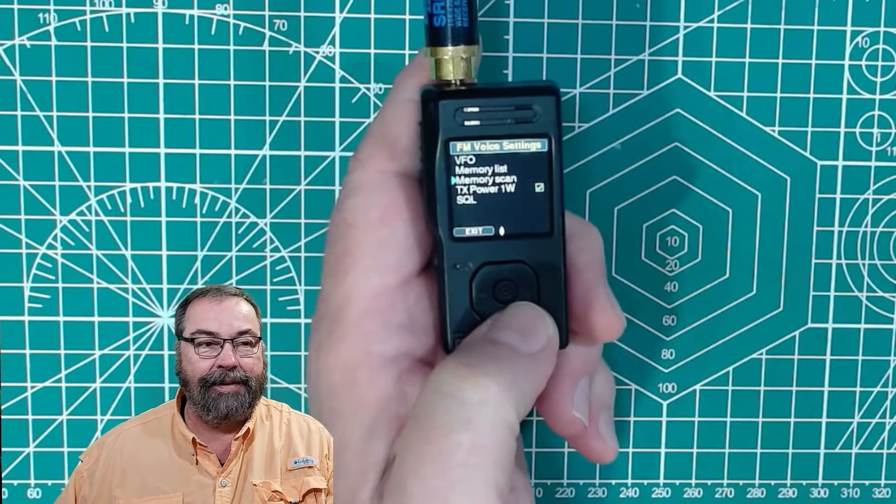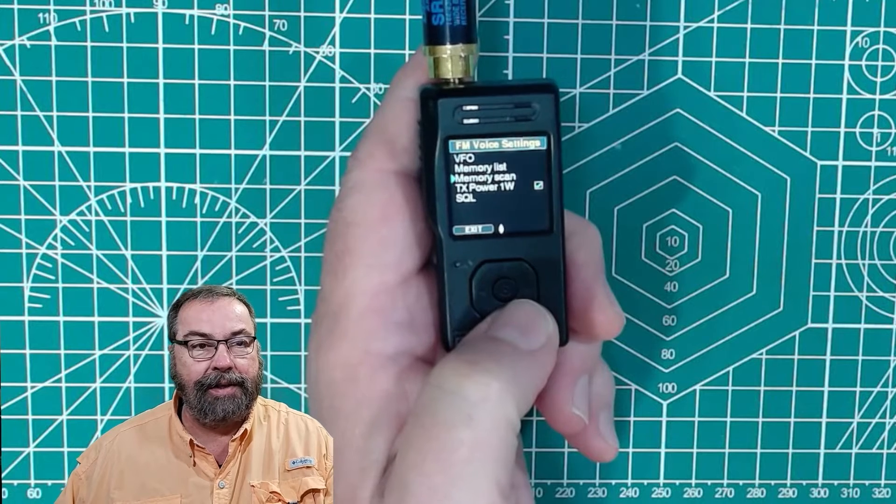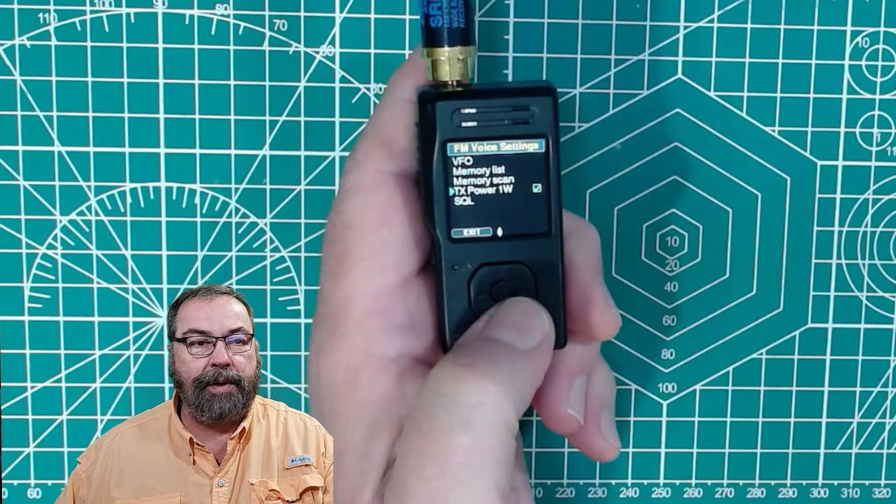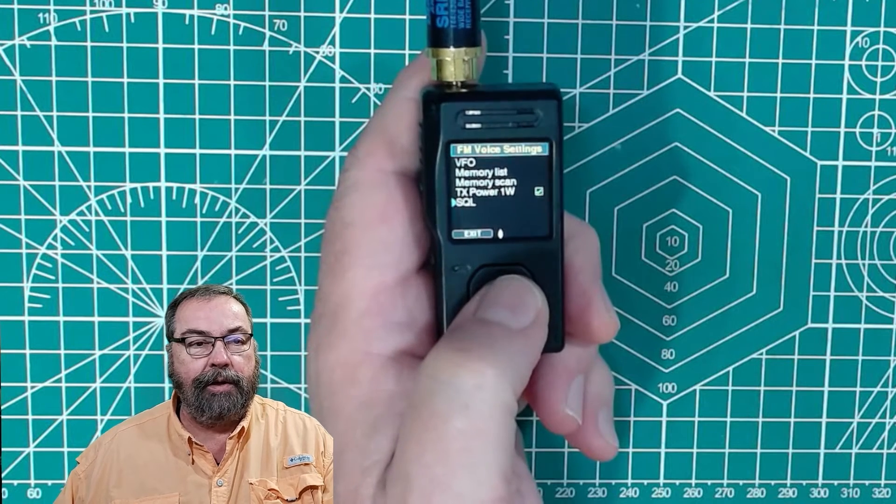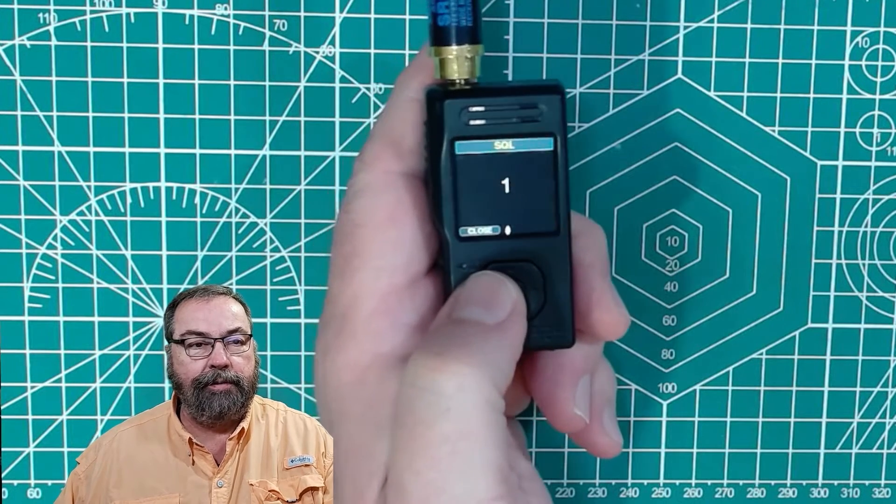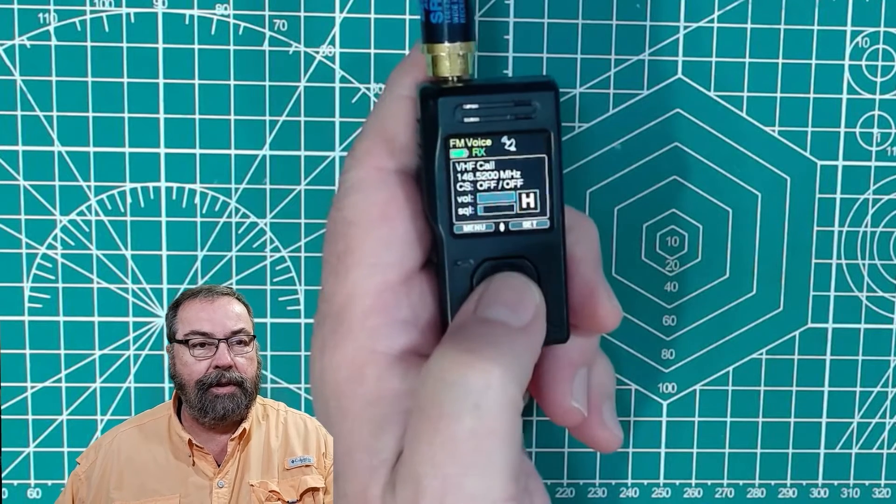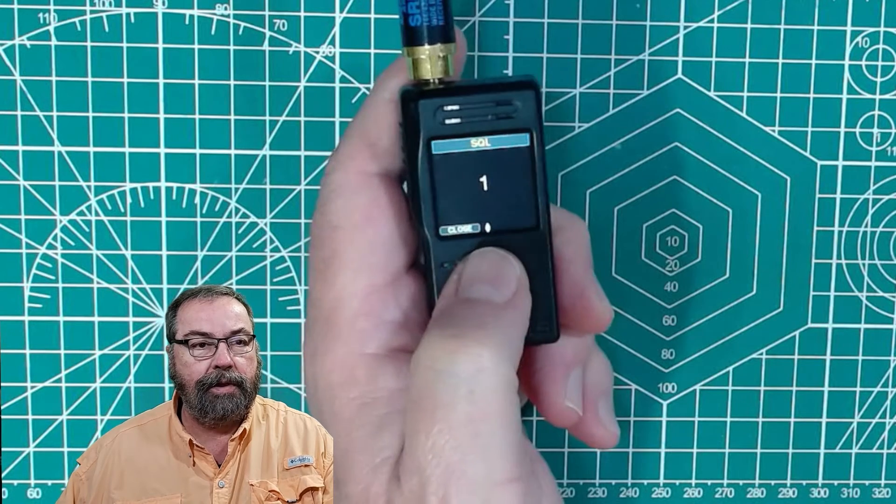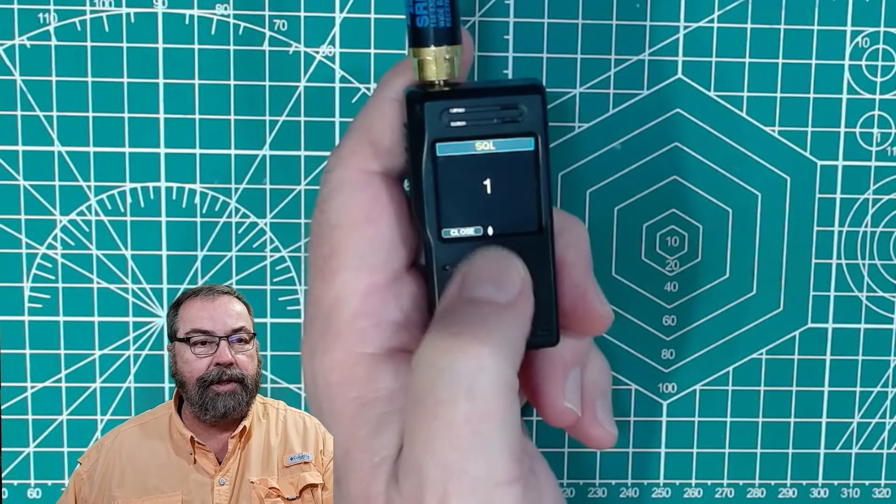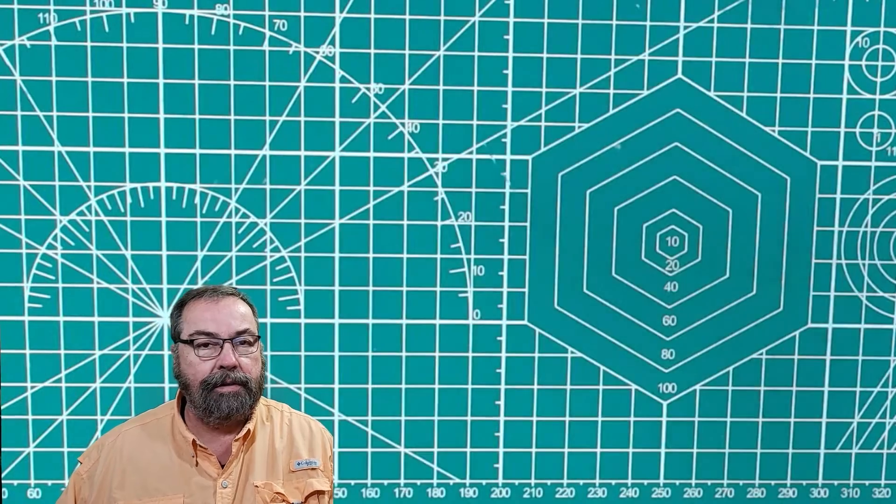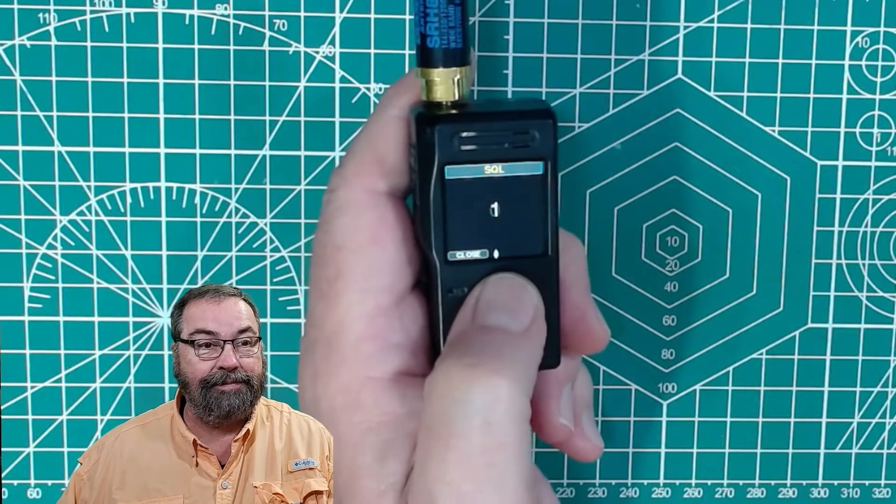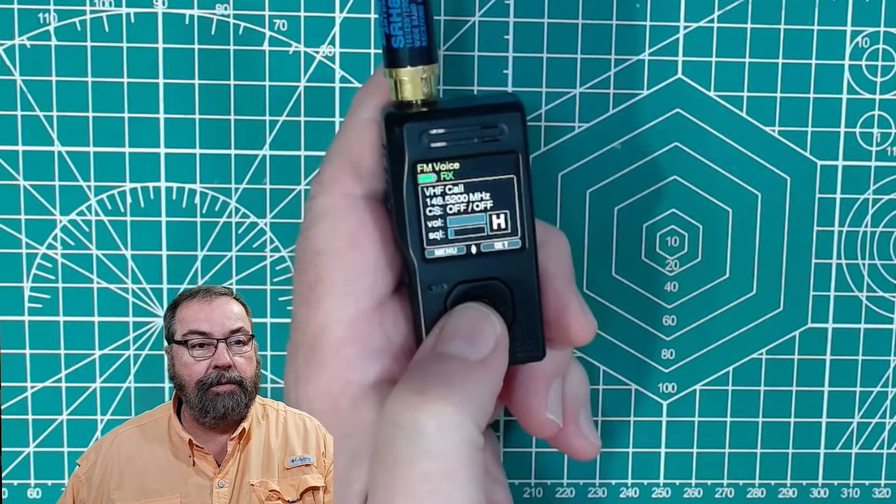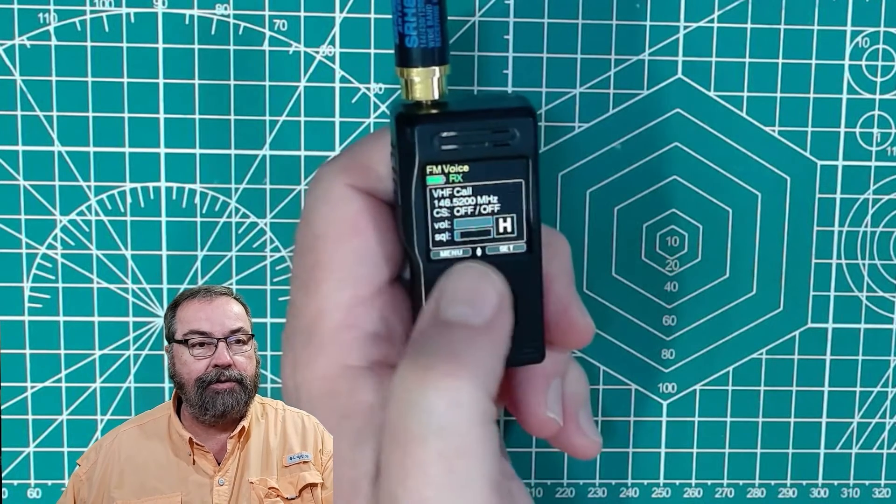And then we'll go back here. We can scan with this. I have not tried scanning with this. If you want to scan by a scanner, I can't imagine this is going to be fast enough to matter. And then down here, we can set our transmit power to one watt or half watt. And of course, our squelch. And our squelch is on one if we turn it off. Squelch is off. We're going to set that to one for now. And then close. And that takes us back out to the transceiver menu.